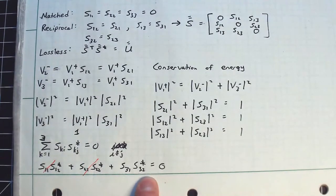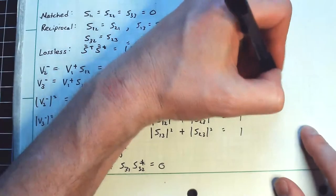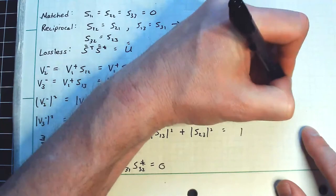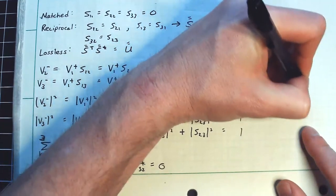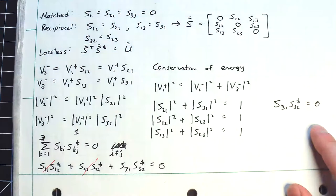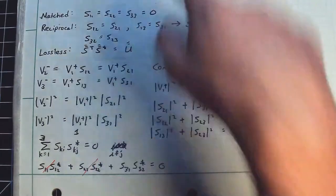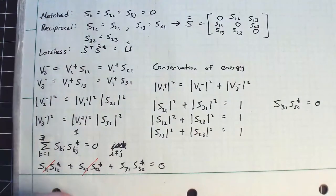So what that implies is this S11 here is zero and this S22 is also zero, which means this product here has to be zero. So let's write that out over here. S31S32 conjugate is equal to zero.